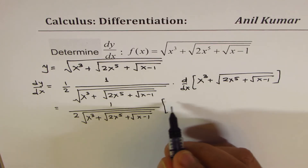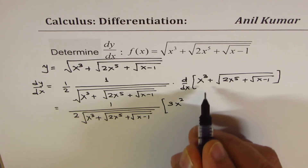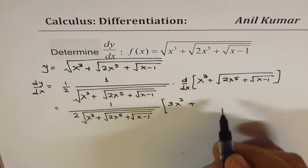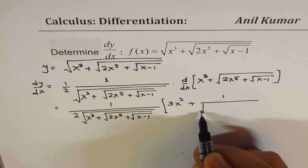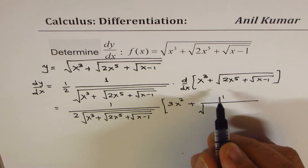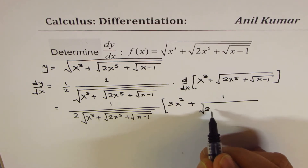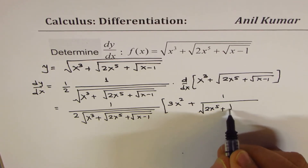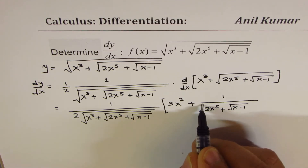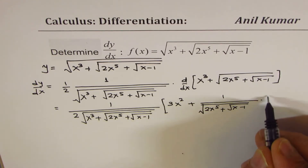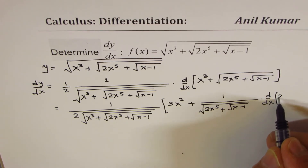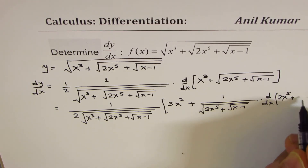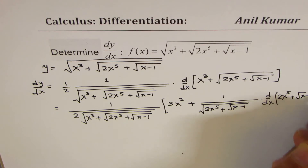The derivative of x³ is 3x². Plus the derivative of √(2x⁵ + √(x − 1)), which is 1 over 2√(2x⁵ + √(x − 1)), times the derivative of the inside function 2x⁵ + √(x − 1).